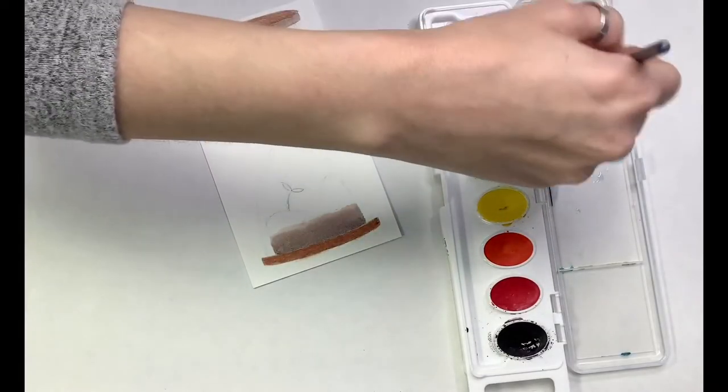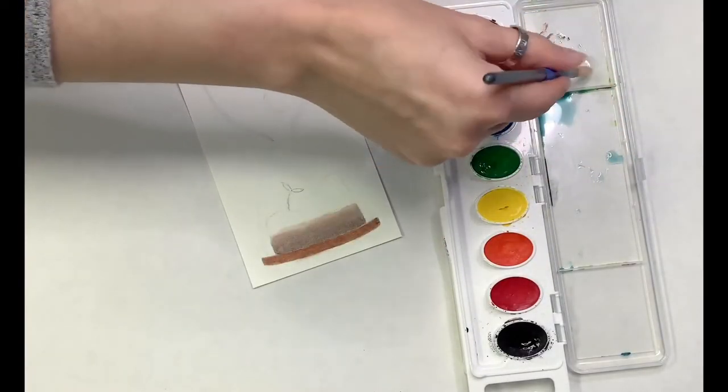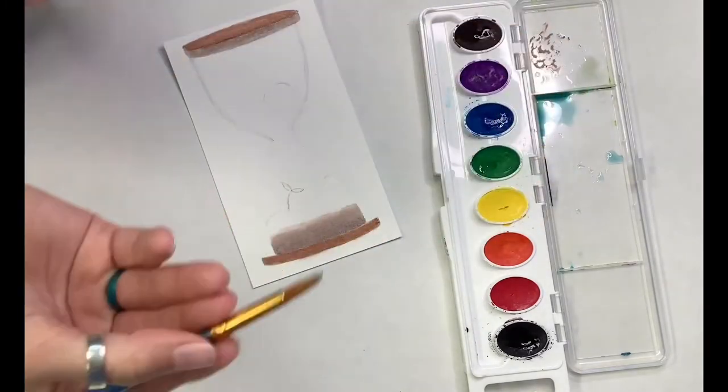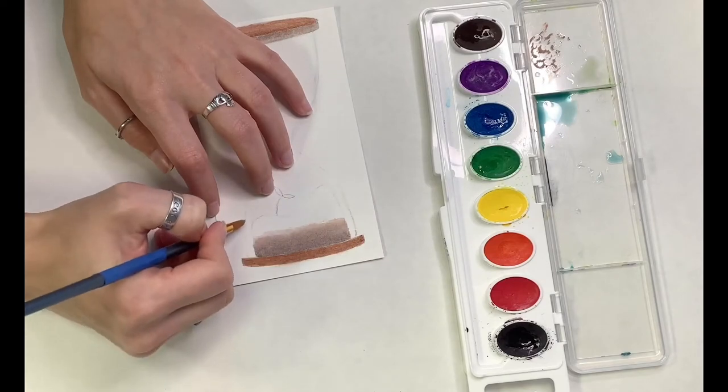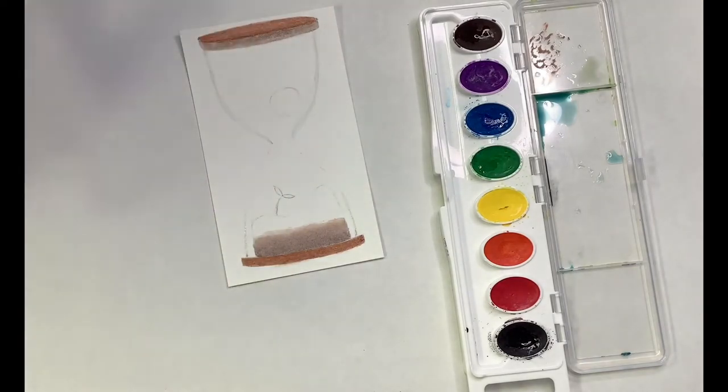Because for the bottom we're gonna mix up an entirely different color. We're using the same basic idea. I've got a little bit of black, a lot of water, and a tiny bit of green on my palette. And I'm just coloring in the pencil lines.